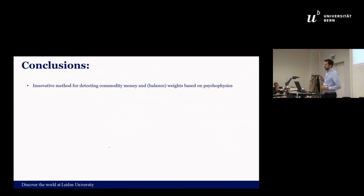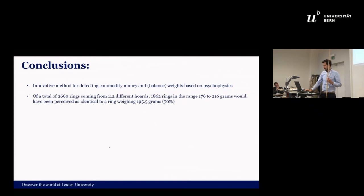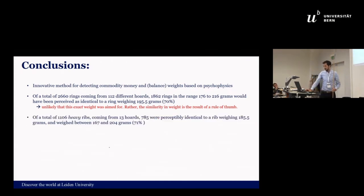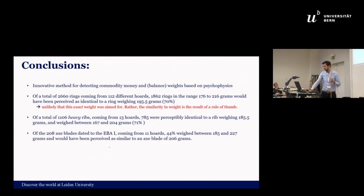Now, conclusions. I think this is an innovative method for detecting commodity money and balance weights, and it would be interesting to see whether we can also use it on other examples. I think one of the really clear conclusions is the very high similarity between the rings. But it must be noted that I'm not arguing that this is an exact weight that they were aiming for. It's the result of a rule of thumb. Similarly for the ribs, very high similarity, and especially actually for this one it's interesting because they come from 112 different hoards, so it's really remarkable that they're so alike.